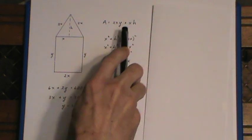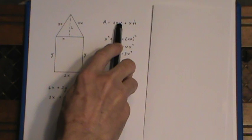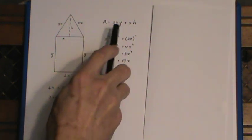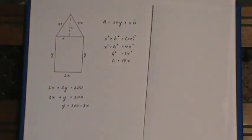Then I look at the area of the window. The area of the window consists of the area of the rectangle, which is 2x times y, that's this part right here, plus, as I said before, half the base times the height, which is just xh.